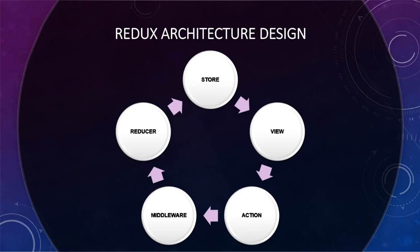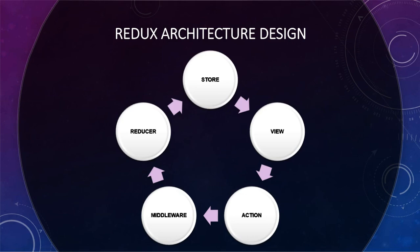Now let's look at the Redux architecture all at once. We have the store — the central part — where we keep the global state. Whenever anything in the store gets updated, the view will be updated. From the view, if any event dispatches an action, it triggers the reducer. In between we have middleware, because for any asynchronous or network/API calls we need Redux Thunk — we'll discuss that later. The reducer takes in the action and the previous state, updates the state, and passes it on to the store. The store is updated, the view gets rebuilt, and this cycle continues — that is basically the Redux architecture.